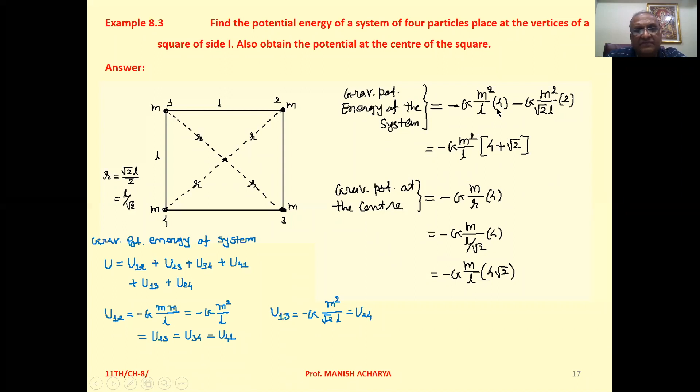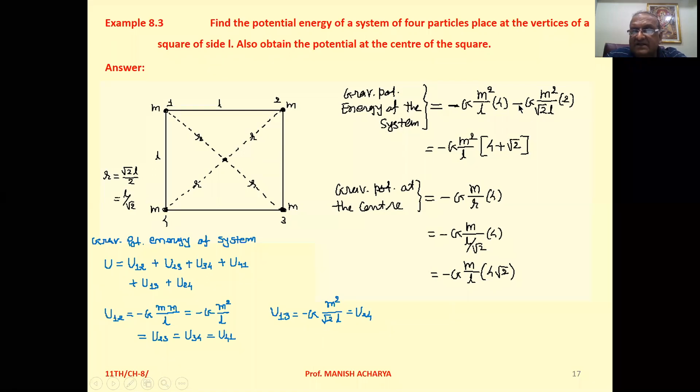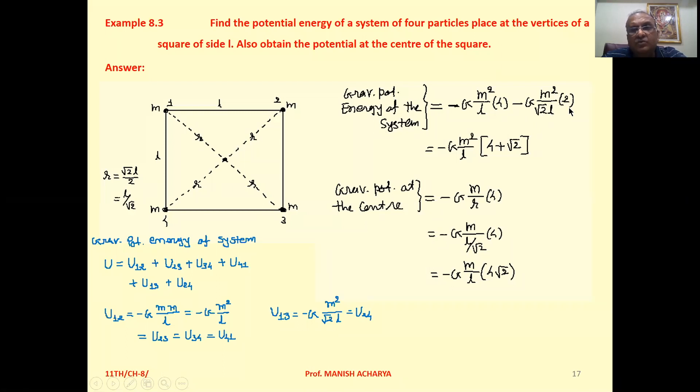Then for these two pairs, 1,3 and 2,4, the gravitational potential energy is minus G m squared, and the distance between 1,3 is root 2 L. So that is minus G m squared by root 2 into L, multiplied by 2.